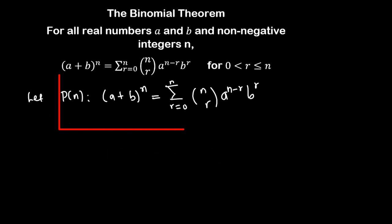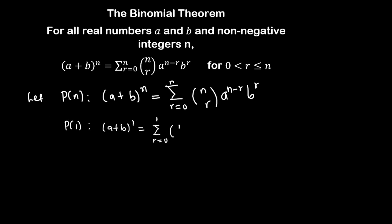For the base case we have our proposition P(n). For the base case we show that P(1) is true, because one is the smallest natural number. For P(1), if you substitute n to be one, on the left hand side we are going to have (a + b) raised to power one. On the right side, putting one into the summation, we have the summation r from zero to one of C(1, r) times a raised to power one minus r, times b raised to power r.